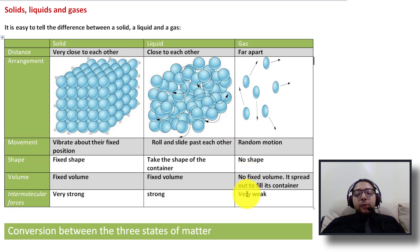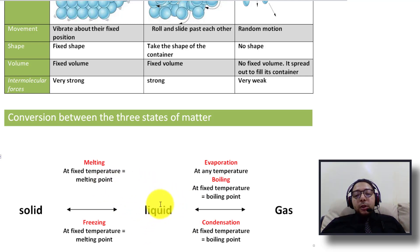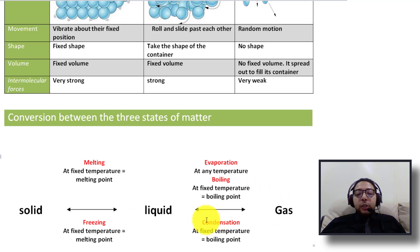We also spoke about the conversion between the three states of matter: solid changes to liquid through melting at the melting point; liquid changes to gas through boiling at the boiling point; gas changes back to liquid through condensation at the boiling point temperature; and liquid changes back to solid through freezing at the melting point. I hope you enjoyed today's lesson — see you next time.